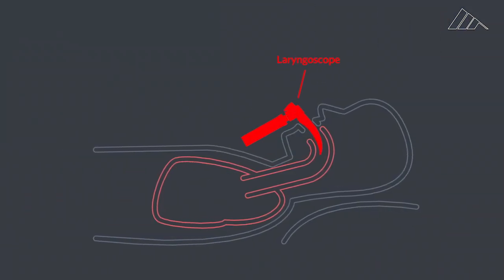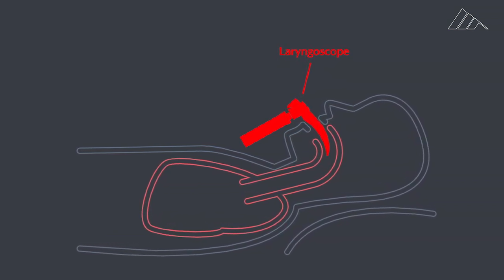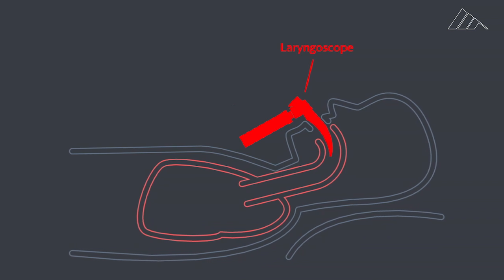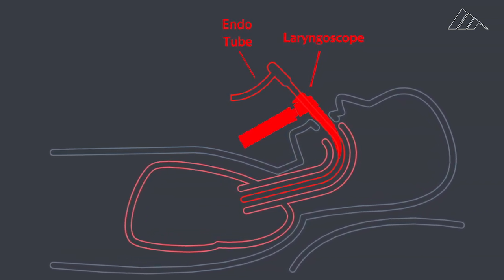A doctor will first insert a laryngoscope into the patient's mouth. The patient is given sedatives and other drugs to ensure that he or she isn't awake during any of the process. An endotracheal tube goes through the laryngoscope and down into the trachea.